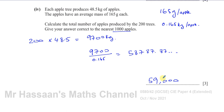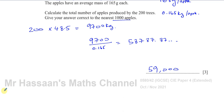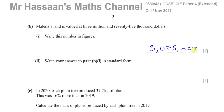Continuing with the next part — it's still an arithmetic type of question. It says write this number in figures: Molina's land is valued at 3 million and 75 thousand dollars. So that's 3,075,000 dollars.